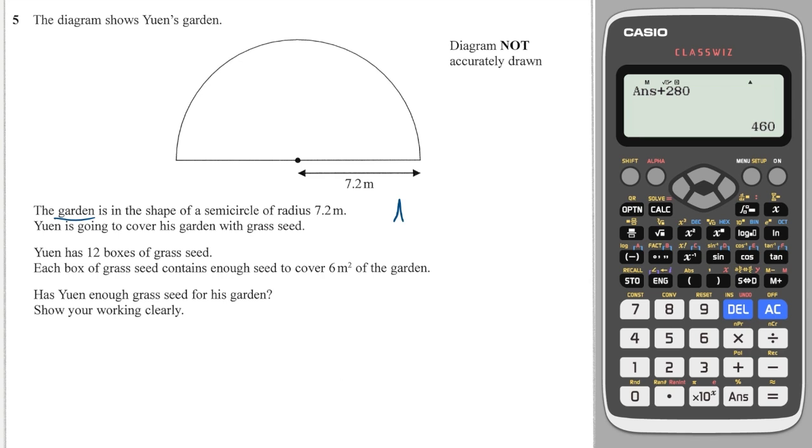The area of a circle is πr². So a semicircle is πr² over 2. So we know the radius already, which is helpful. So it's just π multiplied by 7.2² and then all over 2. Well, let's just do it like this and then divide that by 2. And that's going to give you 81.4.